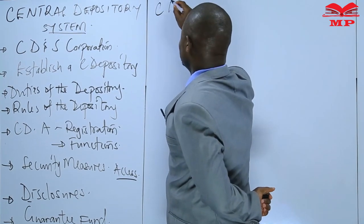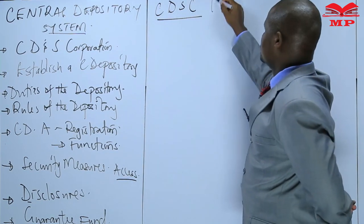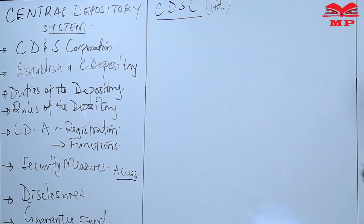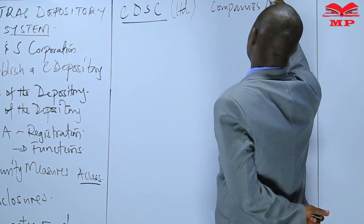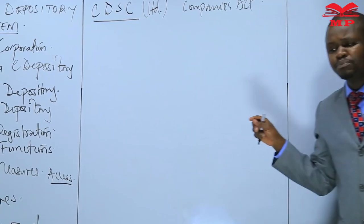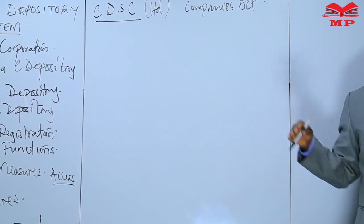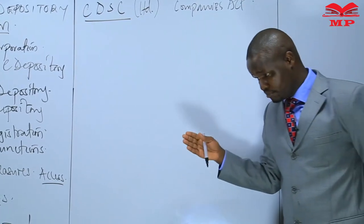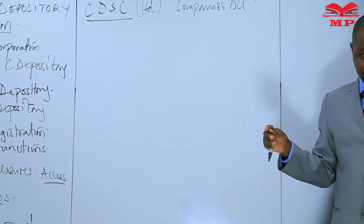Let's begin with matters on the Central Depository and Settlement Corporation. The CDSC is a limited company incorporated in Kenya under the Companies Act. This was back in the year 1999 under Companies Act Chapter 487. We now have a new Companies Act of 2015, but in 1999 this corporation was brought to life, incorporated as a central depository corporation for the purposes of handling deliveries and settlement of securities transactions.